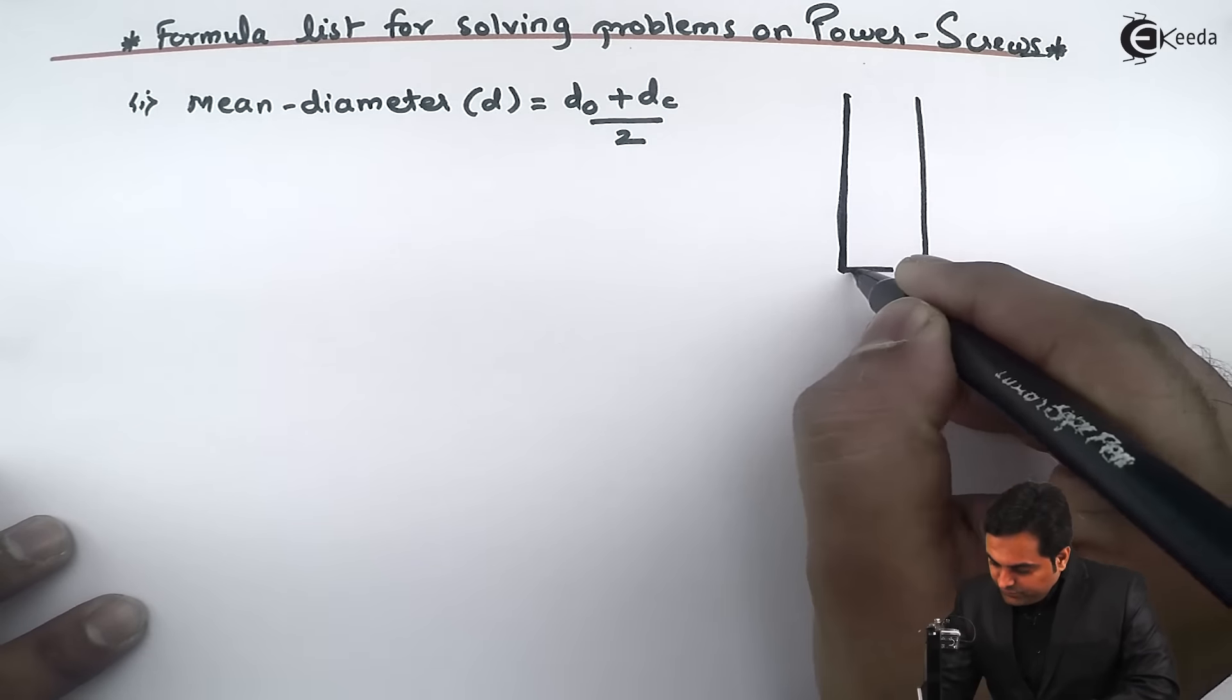After writing ideal effort, now I will write actual effort. Actual effort applied to rotate the screw. So actual effort is denoted by P equals W into tan of alpha plus phi. This is the actual effort. Since we are considering tan of phi, which is called the friction angle, phi is the friction angle. So this formula is considering friction. Since it is considering friction, here it is called actual effort.